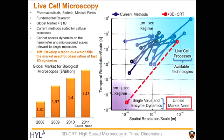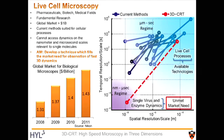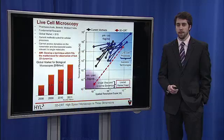The time and spatial scales that are accessible to current methods are well suited for cellular processes, but are unable to probe the microsecond time and nanometer spatial scales. Measurements in the microsecond and nanometer regime are critical to understanding the behavior of single biomolecules such as enzymes and viruses.